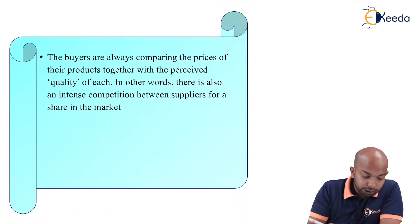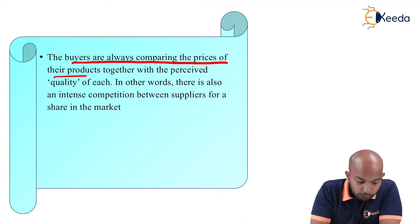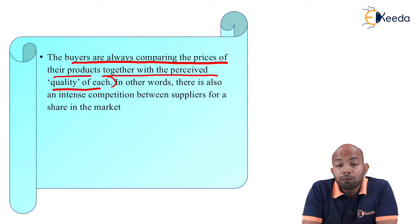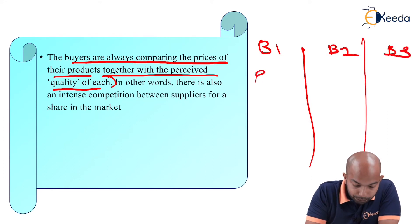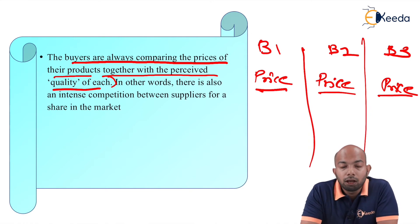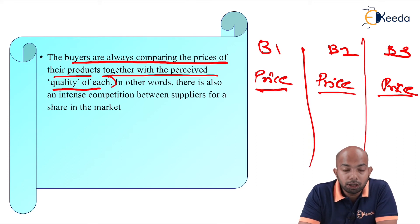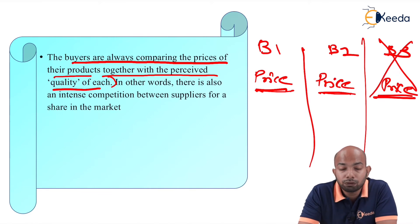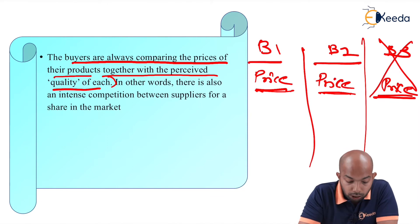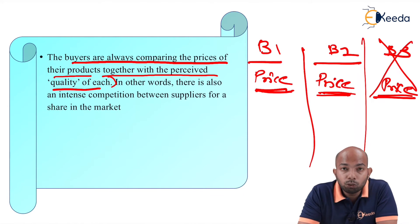Buyers always compare the prices of products along with the perceived quality of each. Let's say there are Bike 1, Bike 2, and Bike 3. You will always compare the price first, because you have a restricted income. You need to figure out which bikes are within your affording range. If Bike 1 and Bike 2 are within your range but Bike 3 is beyond it, you will skip Bike 3 completely and focus only on Bike 1 and Bike 2.